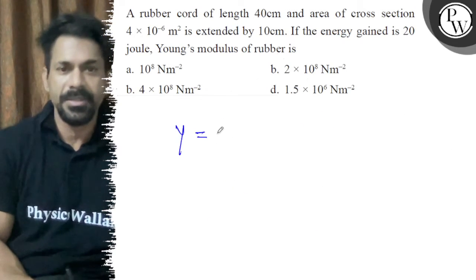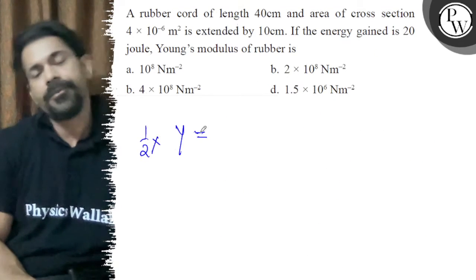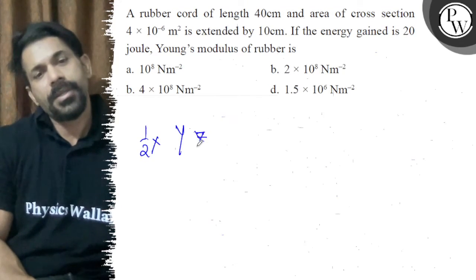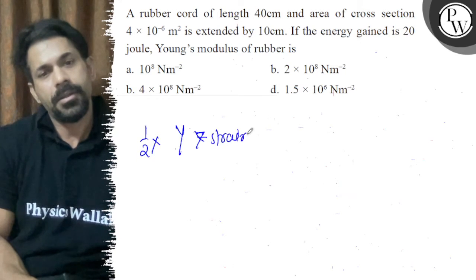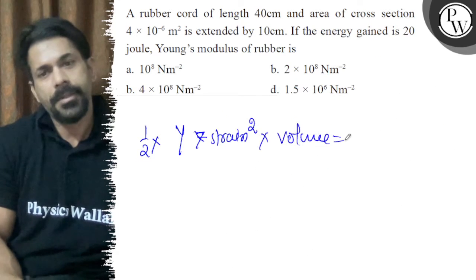So energy gained is what? 20 joule. So energy is 1 by 2 into y into strain square into volume. Right, and that is 1 by 2.